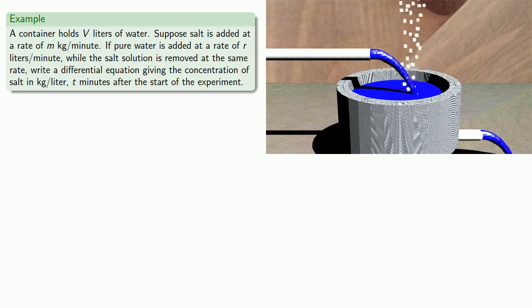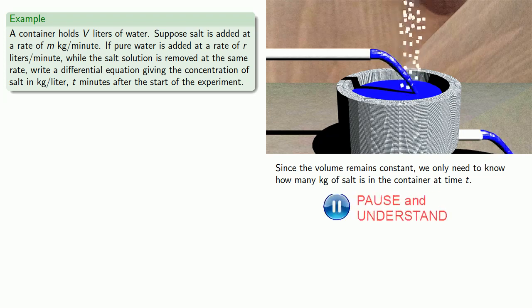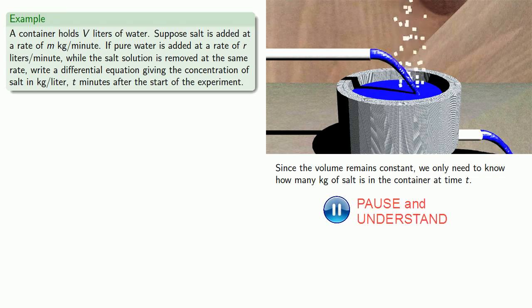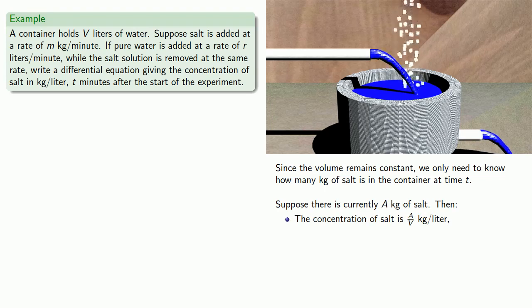We'll make the simplifying assumption that the concentration of salt in the container is uniform. Since the volume remains constant, we only need to know how many kilograms of salt is in the container at time t. Suppose there's currently A kilograms of salt. Then the concentration of salt is A over V kilograms per liter.